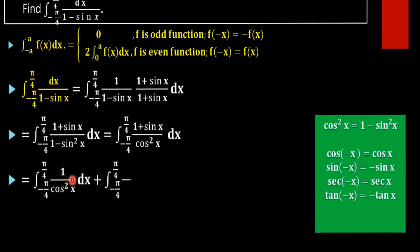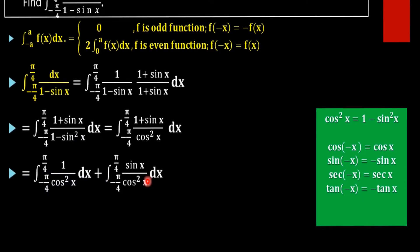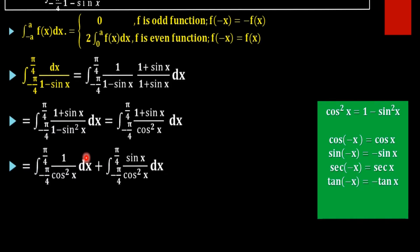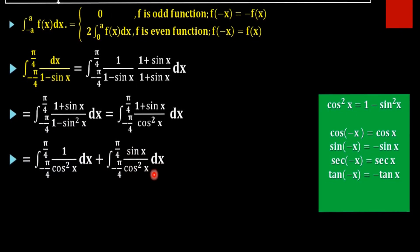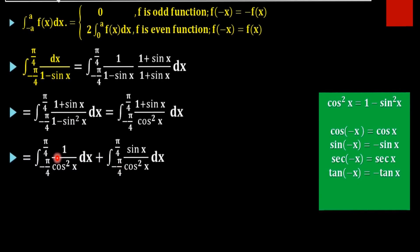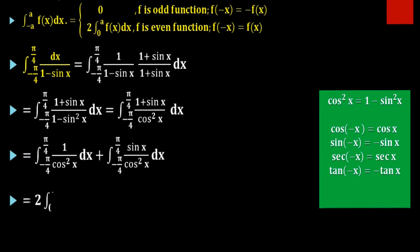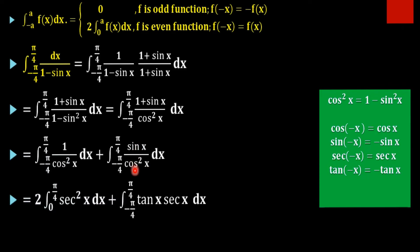Separating the numerator, we split this into two integrals: the integral from minus pi by 4 to pi by 4 of 1 over cos squared x dx, plus the integral from minus pi by 4 to pi by 4 of sin x over cos squared x dx. We can rewrite sin x over cos squared x as tan x times sec x.